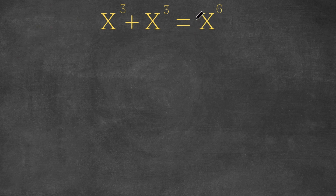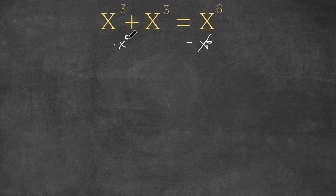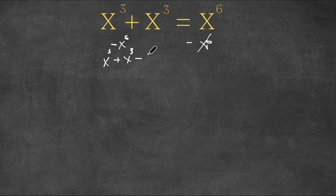Our first step is to get all the x's on one side. So what we're going to do is subtract x to the power of 6 on both sides so that it joins the other x's. This results in us having x to the power of 3 plus x to the power of 3 minus x to the power of 6 equals 0.